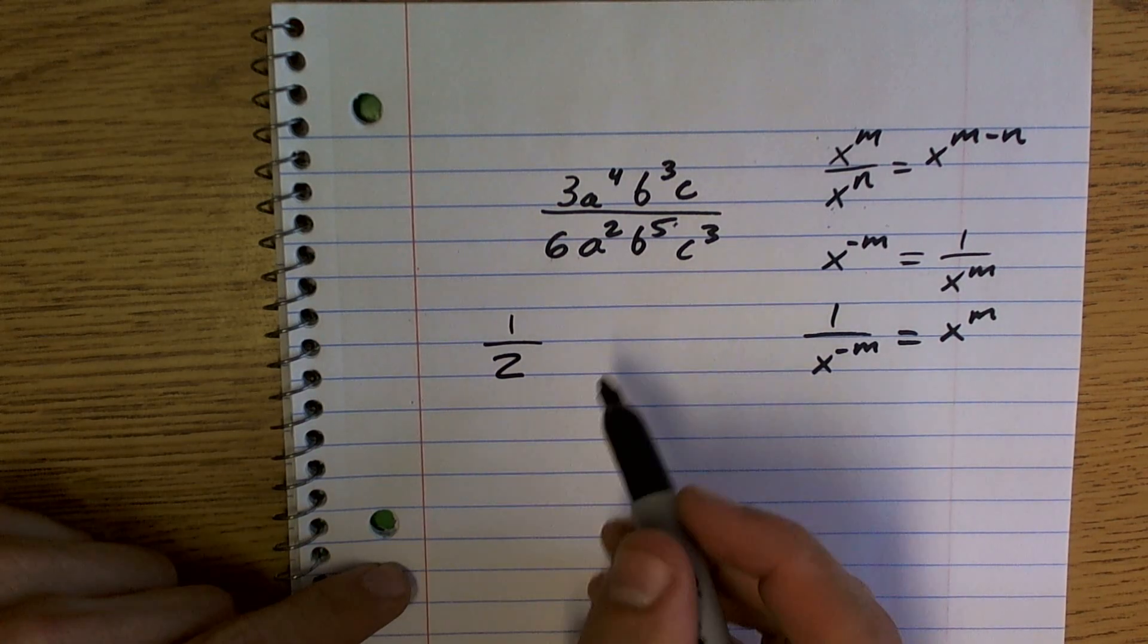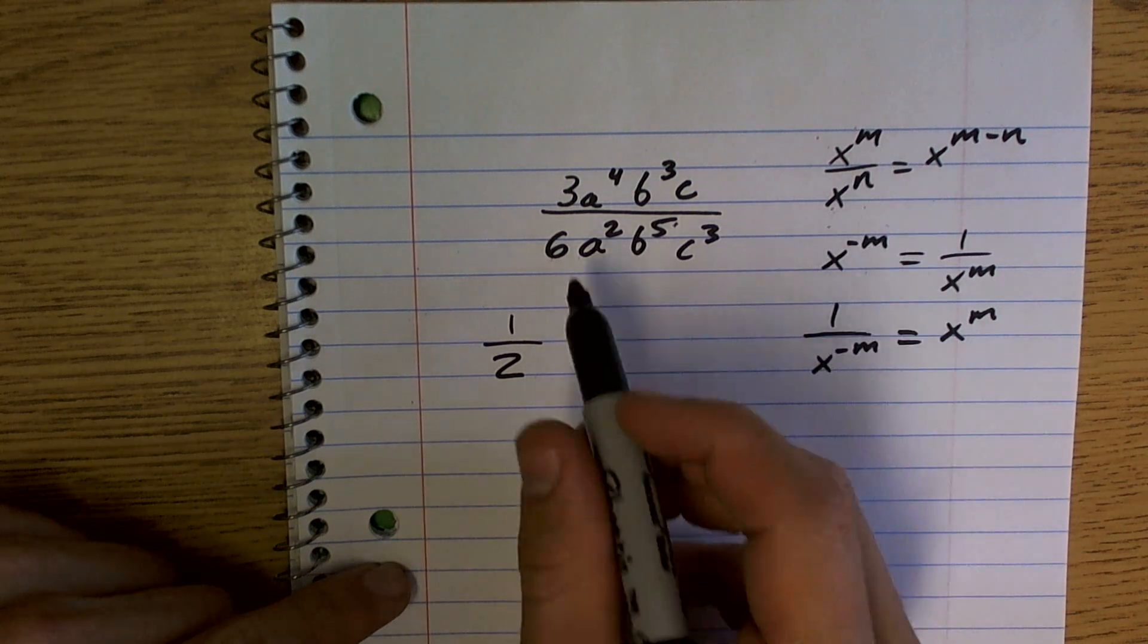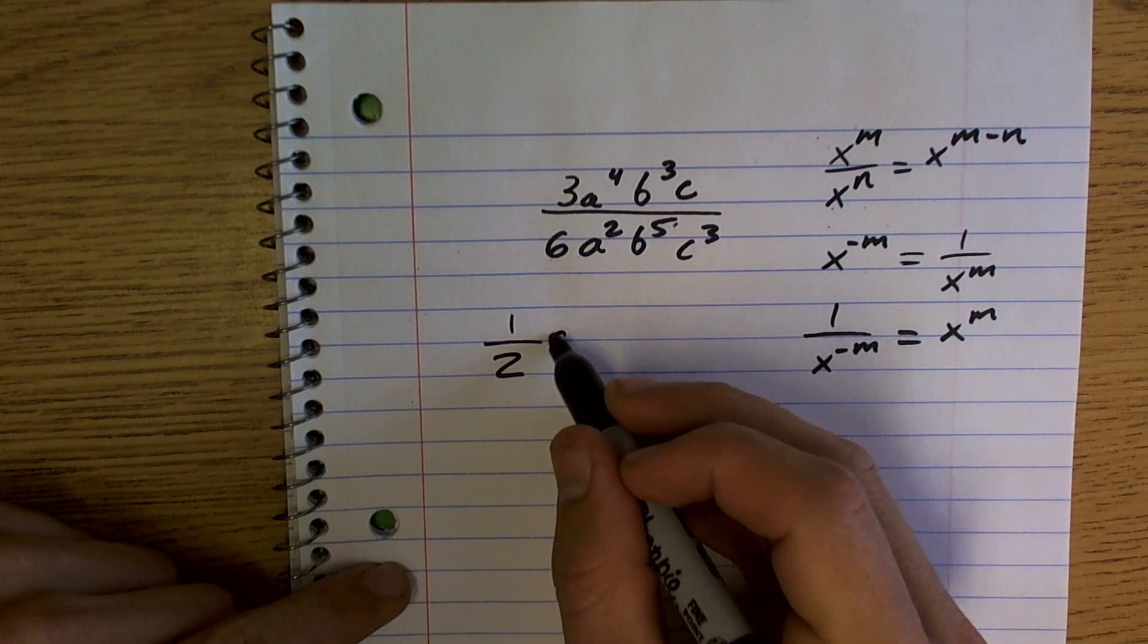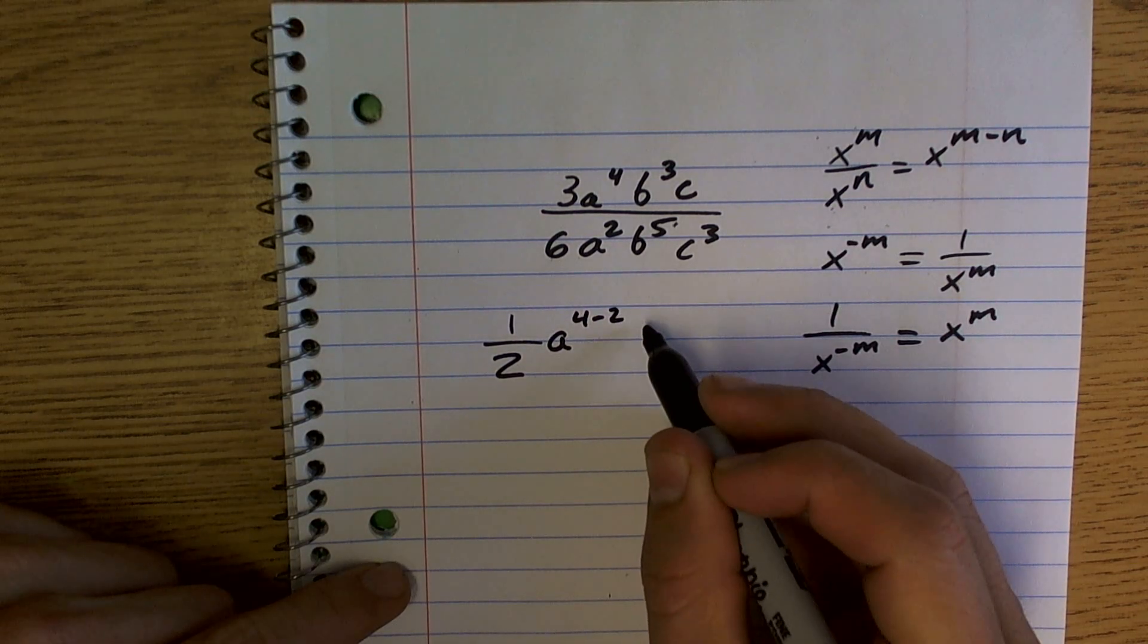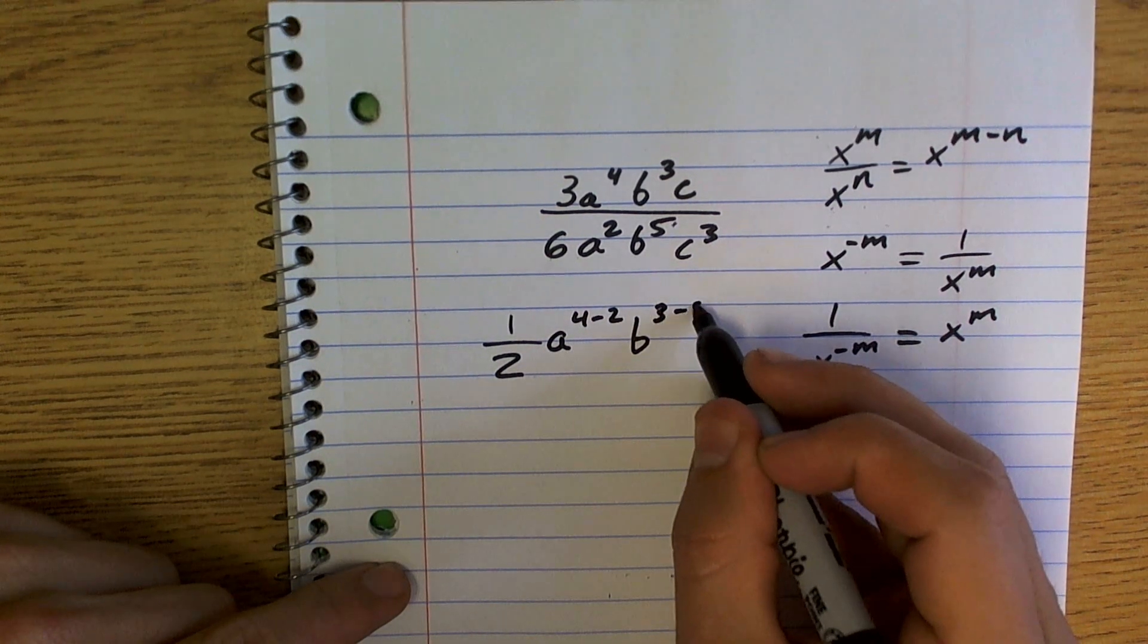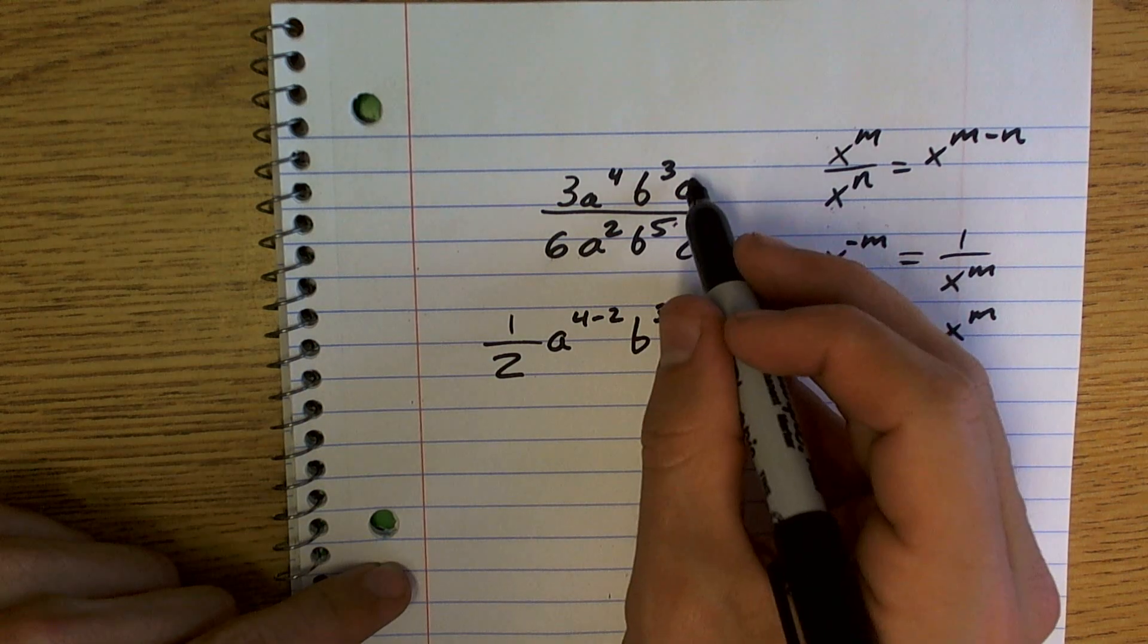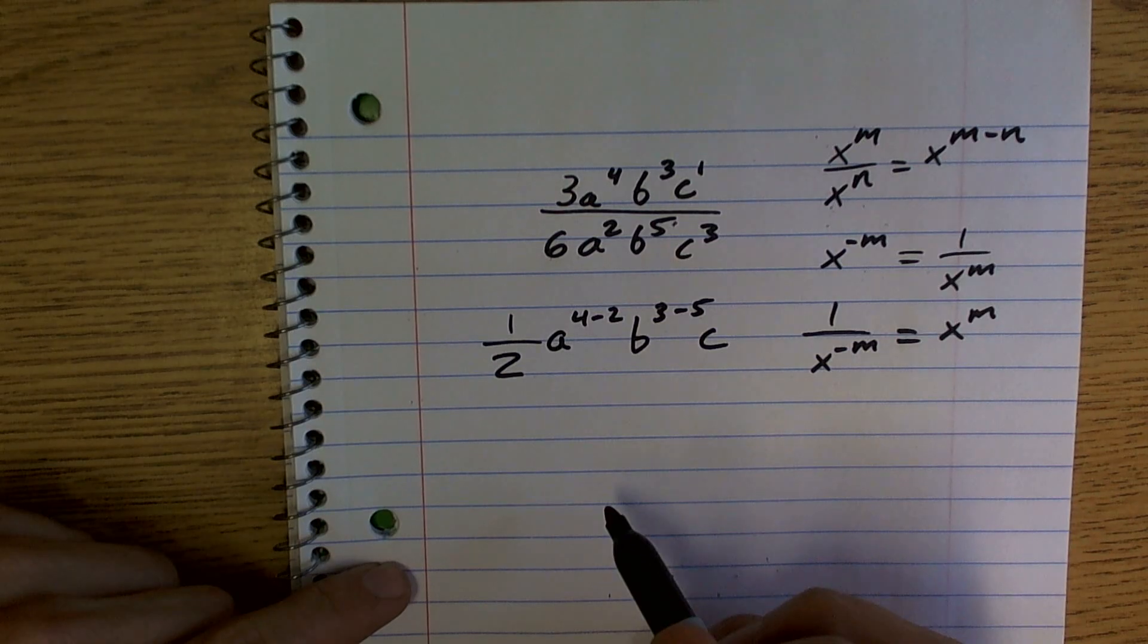So I'm going to reduce that down to one-half, and then I'm going to follow my rules of exponents. This is going to be a to the fourth over a squared. So I'm going to say a to the four minus two, b to the three minus five, and c to the—if there's no exponent showing there, we know that it's c multiplied by itself one time, right?